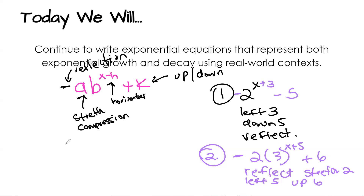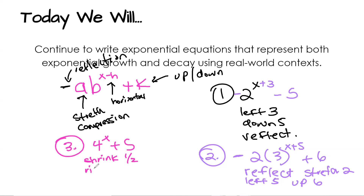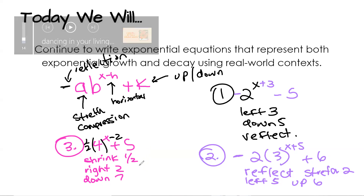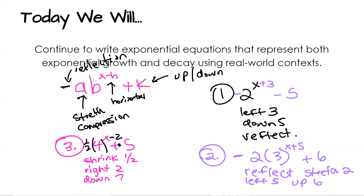The last one: if I give you a parent function of 4 to the (x plus 5), and say shrink it by one half, go right 2, and down 7 — what does that look like? Shrink by one half means a one-half coefficient out front. Right 2 means minus 2 in the exponent. Down 7 means take that 5 and subtract 7, giving negative 2. So the vertical shift becomes negative 2.